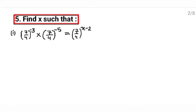Question number 5: find x such that 7 upon 4 raised to the power minus 3, multiplied by 7 upon 4 raised to the power minus 5, is equal to 7 upon 4 raised to the power x minus 2. They are asking to find the value of x.